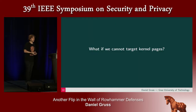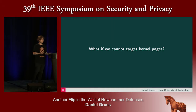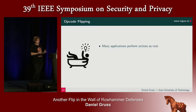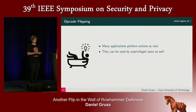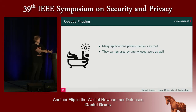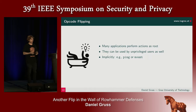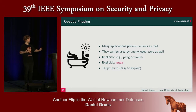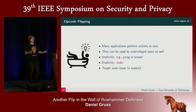Previous defenses suggested that you could just make the kernel out of reach — like the GCAT countermeasure. For that, we came up with a technique called opcode flipping. With opcode flipping, we found that many applications on your system run as root — for instance, sudo runs as root, because they have to do some operation that unprivileged users cannot, but unprivileged users can use those applications. For instance, ping and mount also. We target sudo because it's easy to exploit — straightforward. If something is wrong in sudo, then we might be root.